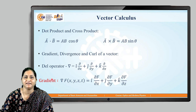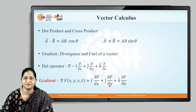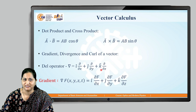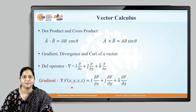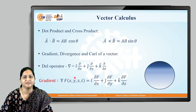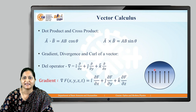The gradient of a scalar function is the product of the del operator and that function f. When we take the gradient, we get: i·(∂f/∂x) + j·(∂f/∂y) + k·(∂f/∂z). The unit vectors i, j, k are added to this result, making gradient a vector quantity. The gradient of a field gives us the direction of maximum change in that field, as shown in the diagram.